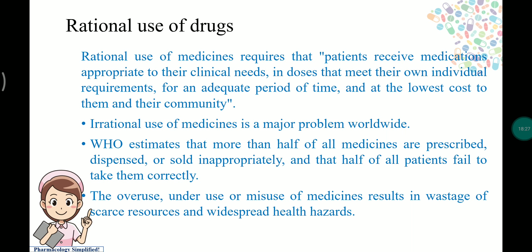Rational use of medicines requires that patients receive medications appropriate to their clinical needs, in doses meeting their individual requirements, for an adequate period, and at the lowest cost to them and their community. For example, a patient with fever should receive medication for fever and associated ailments — not a dump of drugs — tailored to whether they are a child, pediatric, geriatric, or adult patient.